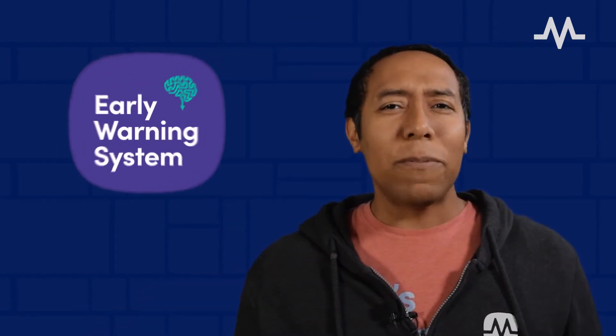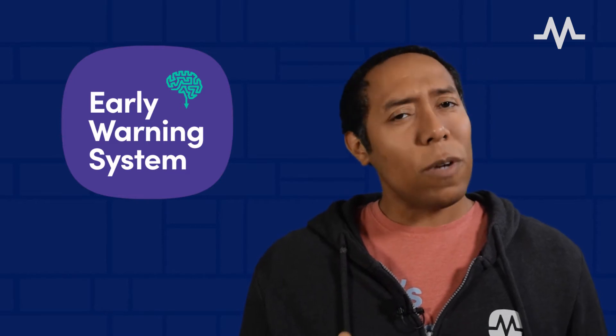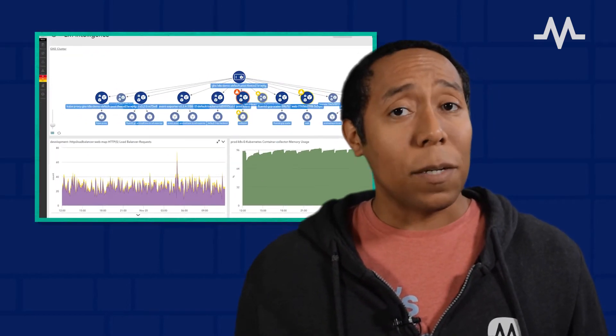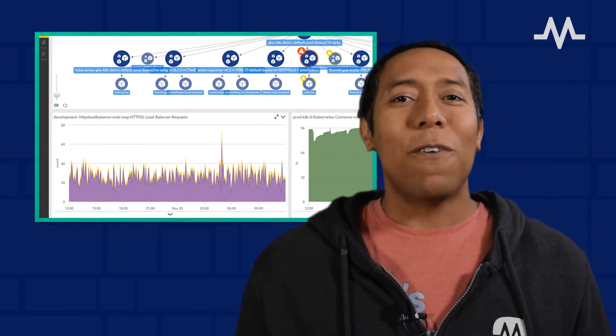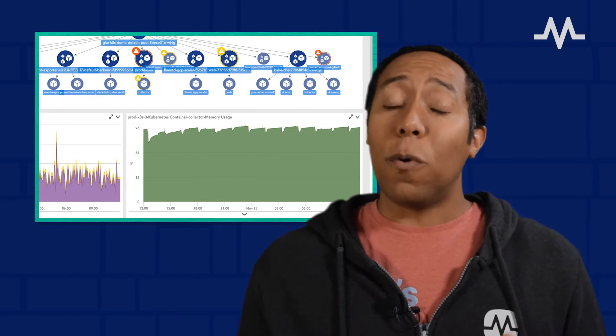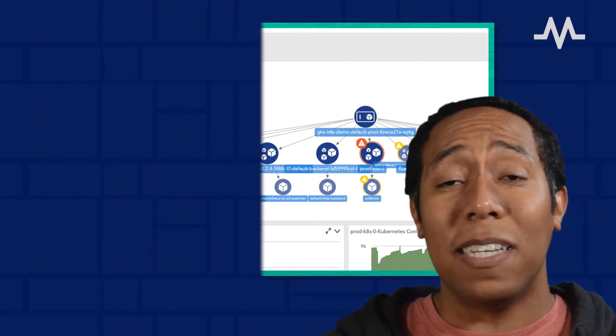Today, we'll be talking more about AIOps and the benefits AI can bring to ITOps, DevOps, and SRE teams in the form of an early warning system. An AIOps early warning system may sound complicated, but it's actually straightforward. Modern observability platforms like LogicMonitor contain a set of features that when used together form a system that can predict issues before they occur and prevent IT downtime within today's modern IT environments.